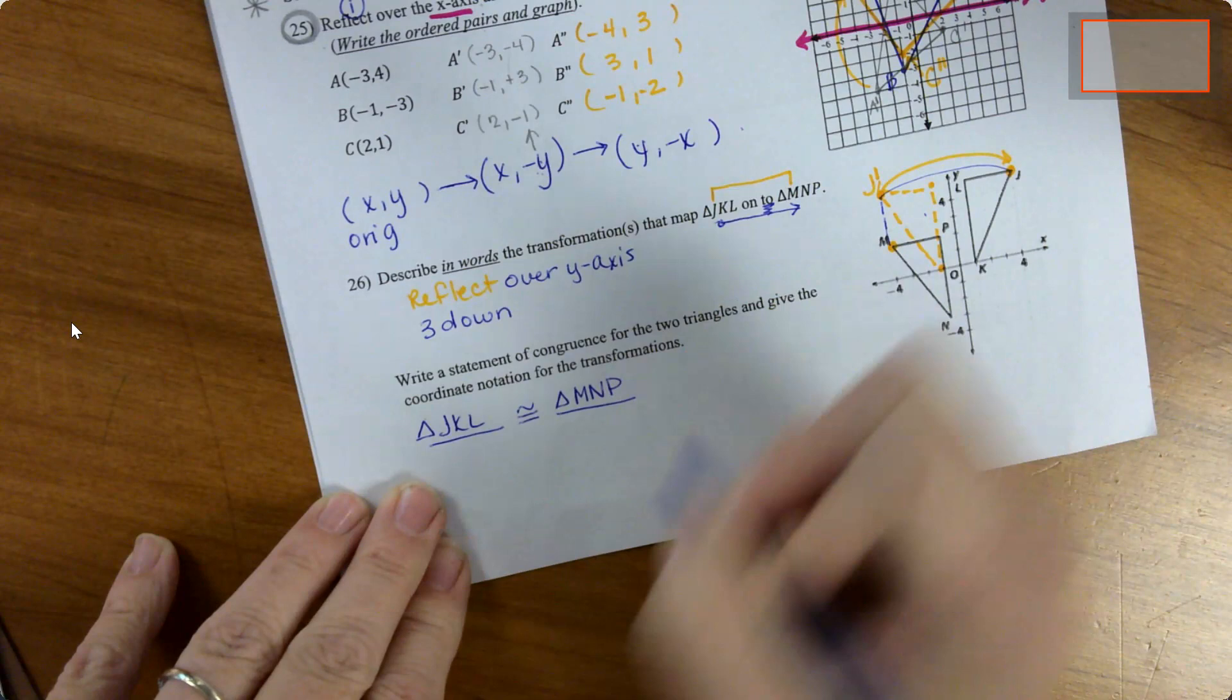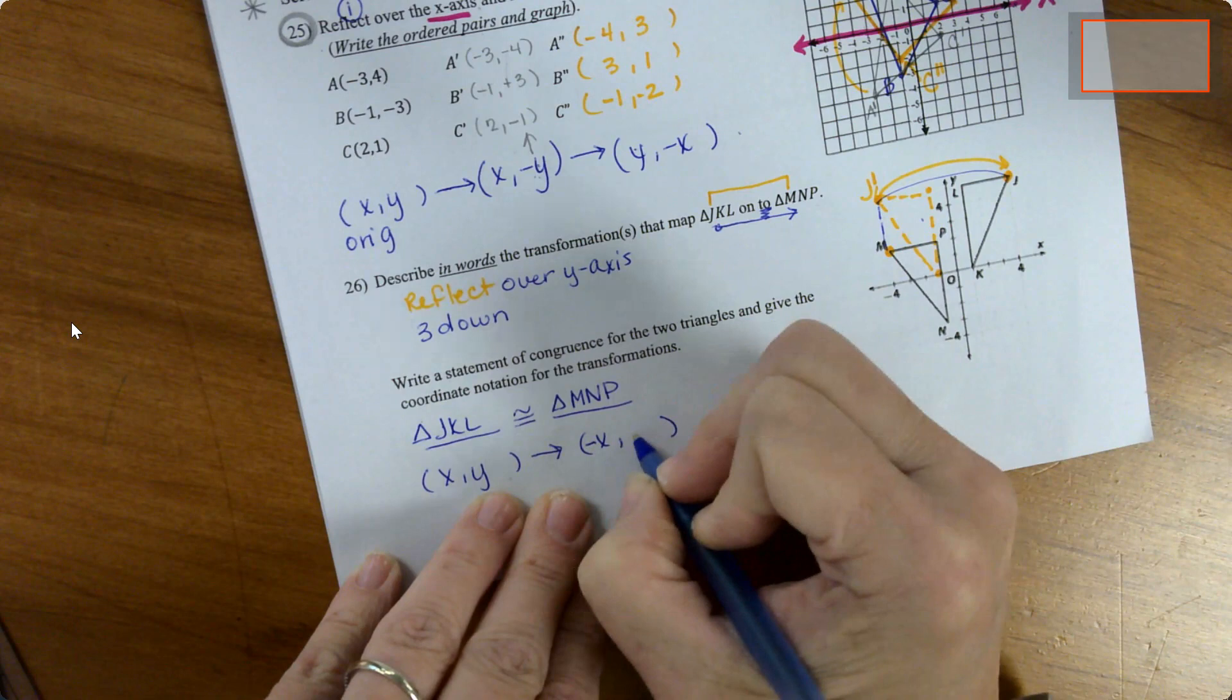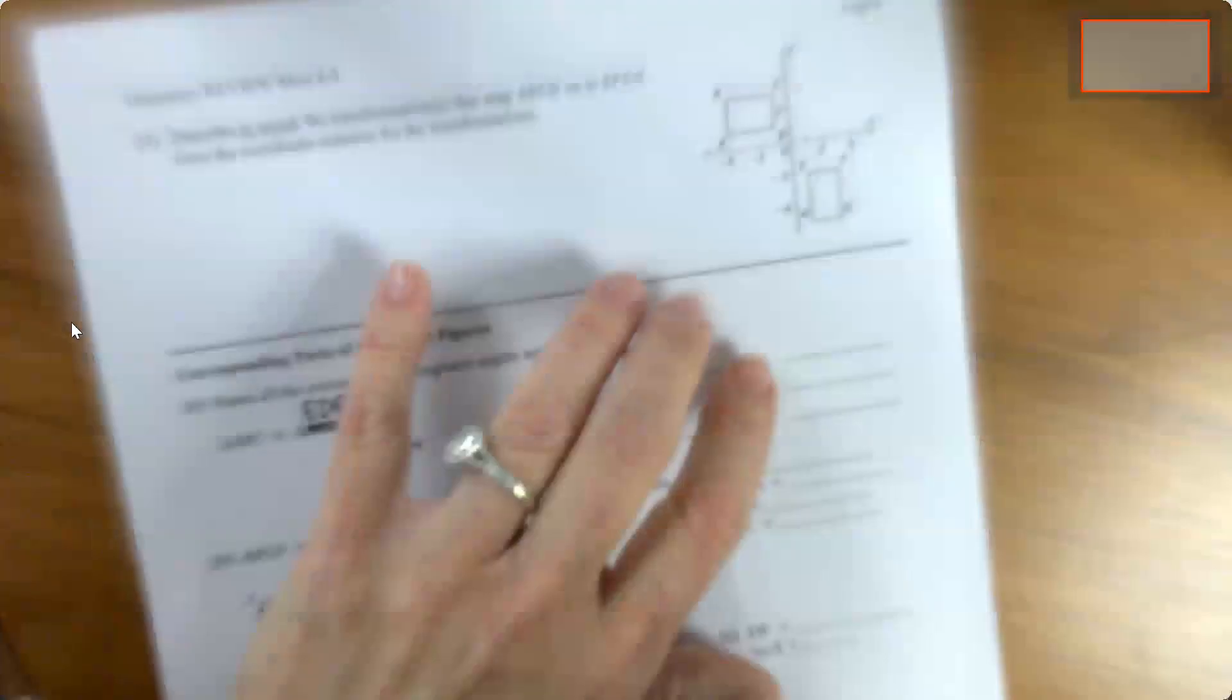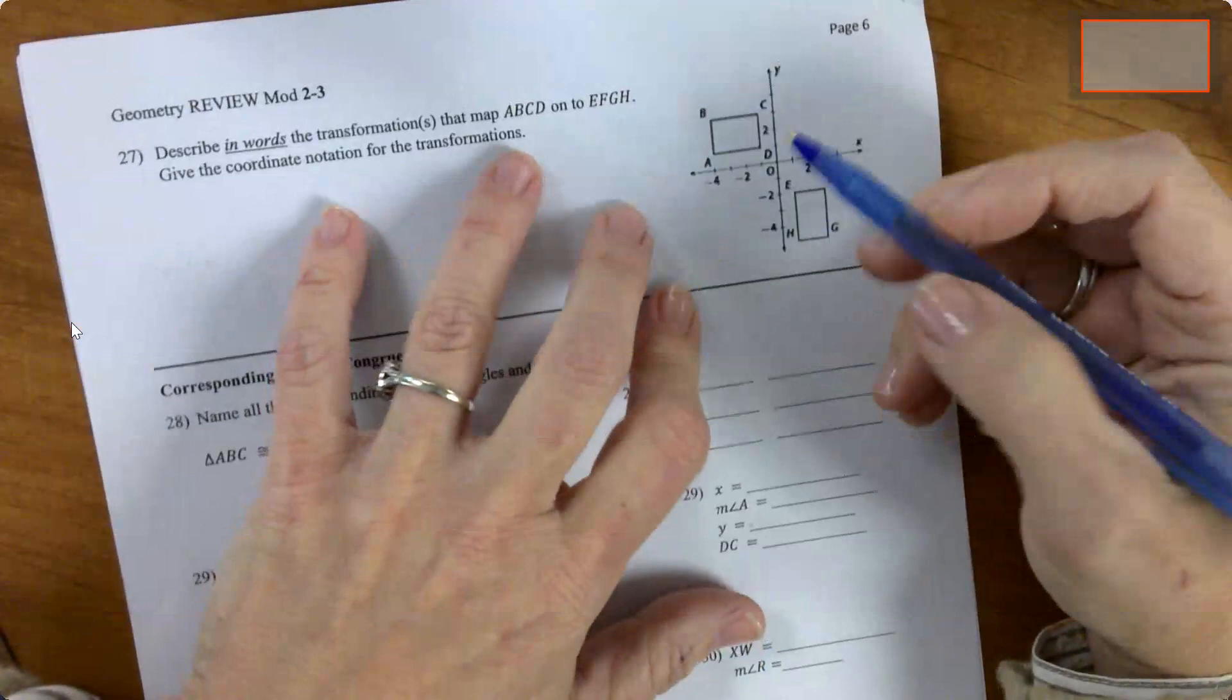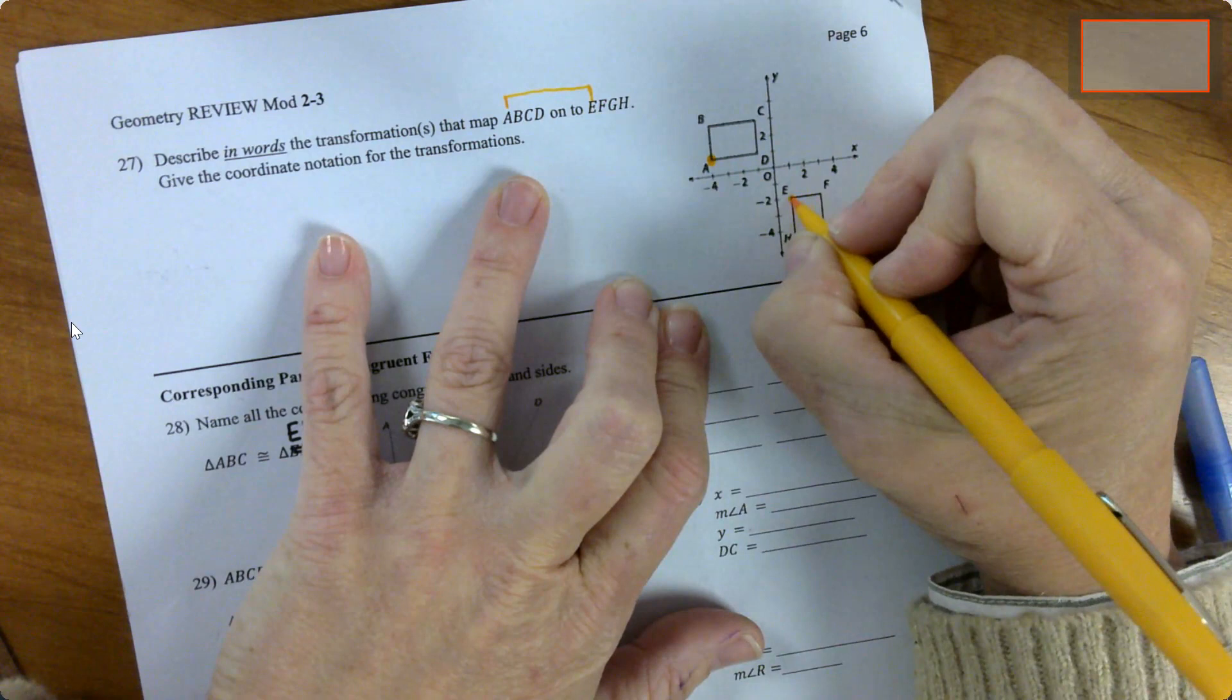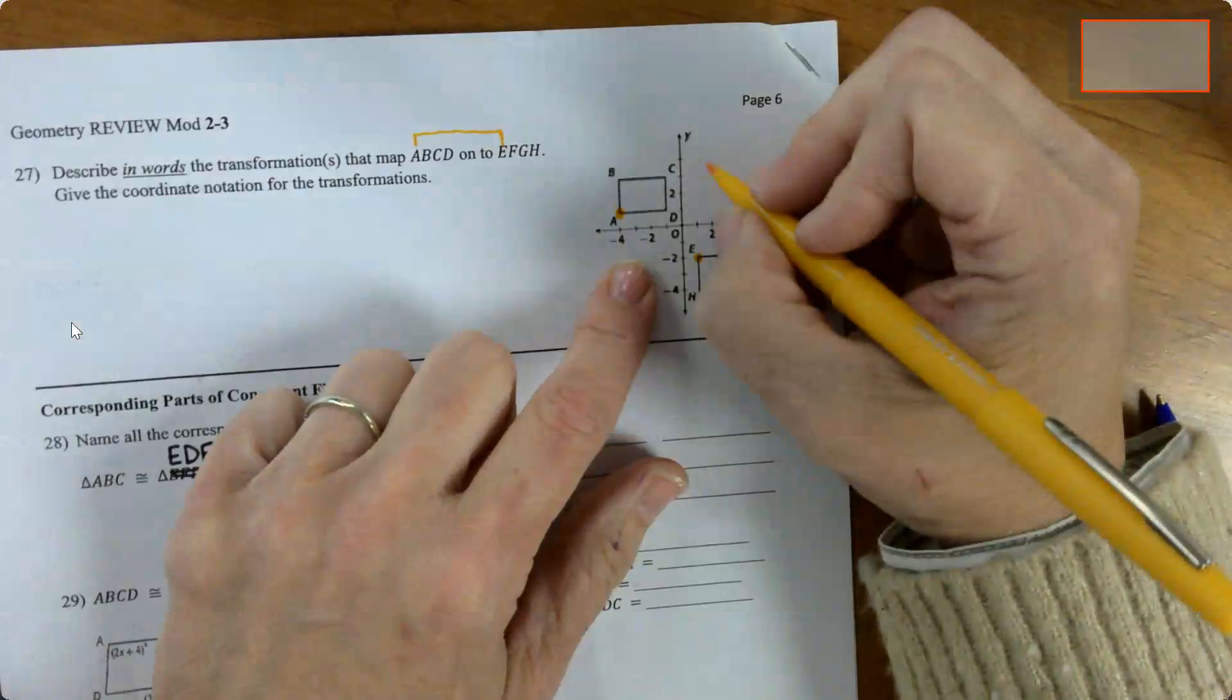We've got one more for this one. Describe in words the transformations that map ABCD to EFGH. And again, I'm looking at what matches what. Point A has to be E. It has to come around like that. So when I look at this, this is side to side, this is up and down. So there's probably some sort of rotation like this. So I think it's going to be a rotation of 90 degrees. You can see how I rotated it 90 degrees like this. And so this is A, right? We want A to slide down here. So that was 90 degrees clockwise, which is 270 counterclockwise.